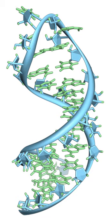Transfer RNA is a small RNA chain of about 80 nucleotides that transfers a specific amino acid to a growing polypeptide chain at the ribosomal site of protein synthesis during translation. It has sites for amino acid attachment and an anticodon region for codon recognition that binds to a specific sequence on the messenger RNA chain through hydrogen bonding.